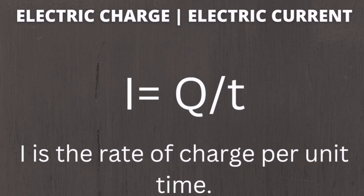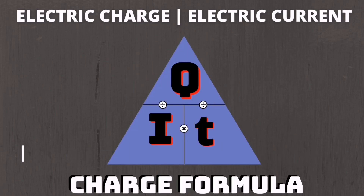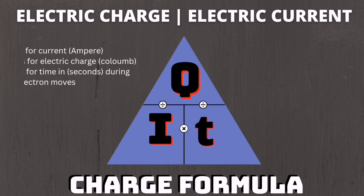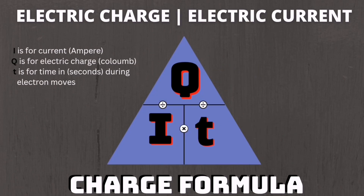To solve for average electric current, we have the formula I is equal to Q over T. We can use the triangle formula to easily memorize it, just like Ohm's Law. For the triangle formula, the operator involved in the horizontal line is division, while the vertical line is multiplication. I is for current in amperes, Q is for charge in coulombs, and T is for time in seconds.